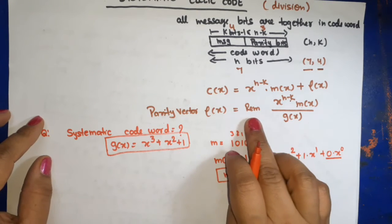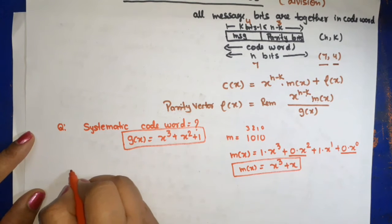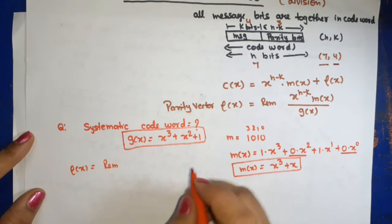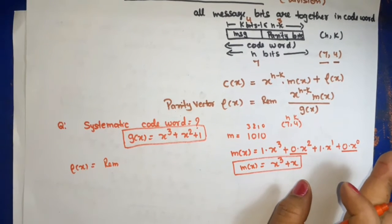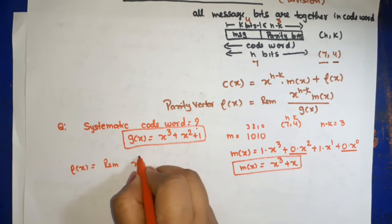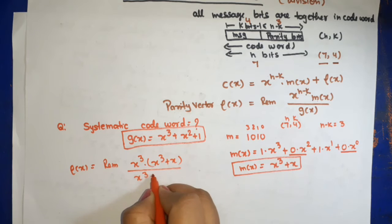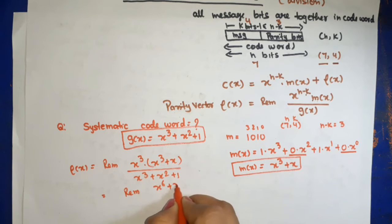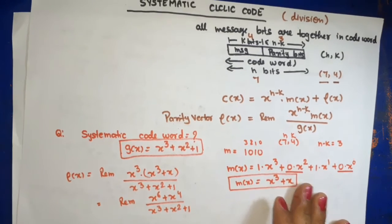Now we need to find ρ(x), the remainder, so we can add it. So ρ(x) = remainder of x^(n−k) · m(x) divided by g(x). For this (7,4) code, n = 7 and k = 4, so n − k = 3. Therefore we compute: remainder of x³ · (x³ + x) divided by (x³ + x² + 1), which simplifies to remainder of (x⁶ + x⁴) divided by (x³ + x² + 1). Now we perform the polynomial long division.